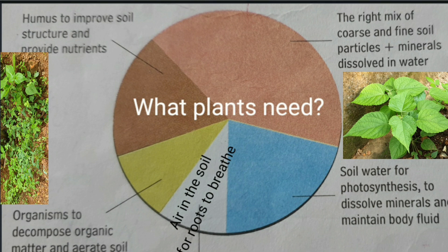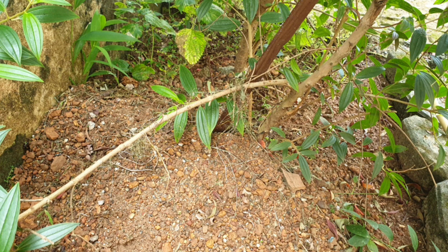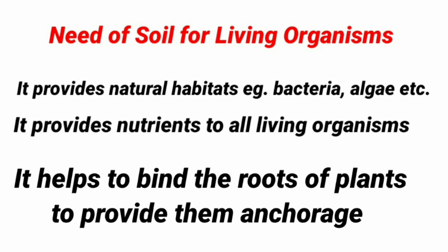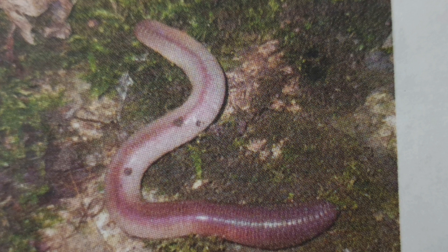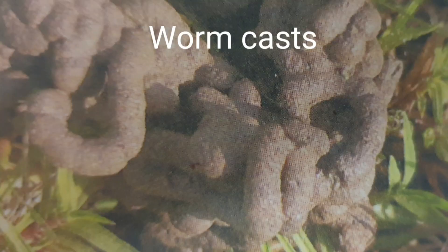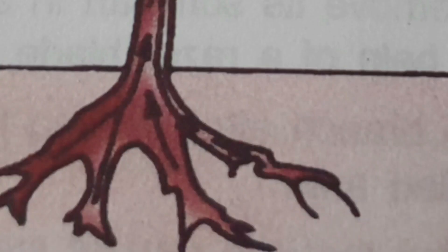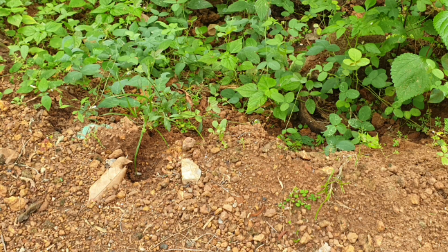The nutrient content of a soil, the amount of humus present, and the depth of the soil are basic factors that decide which plants will grow on a particular soil. Soil provides a natural habitat for various living organisms such as bacteria, fungi, algae, and earthworms, which help maintain soil fertility. Earthworms maintain fertility by releasing nitrogen-rich excreta and by tilling the soil. Soil also binds the roots of plants and provides nutrients for their growth and development.